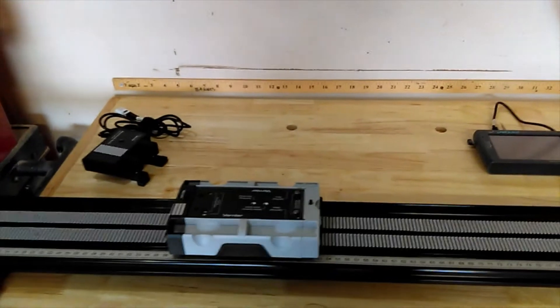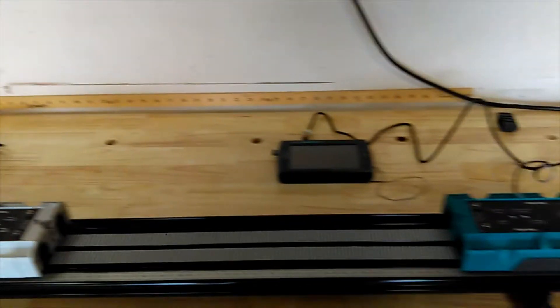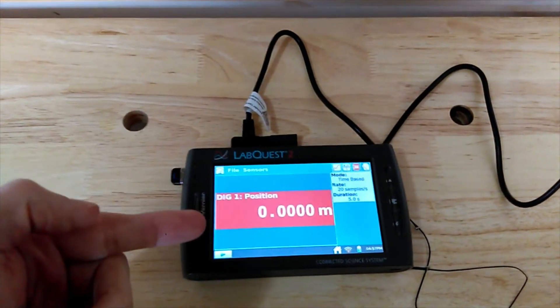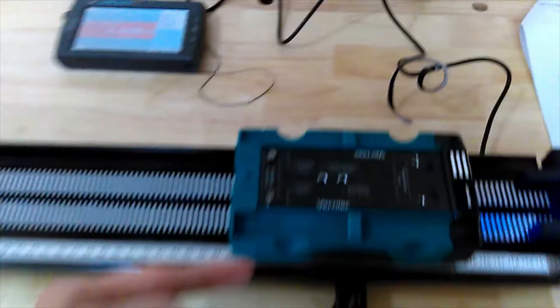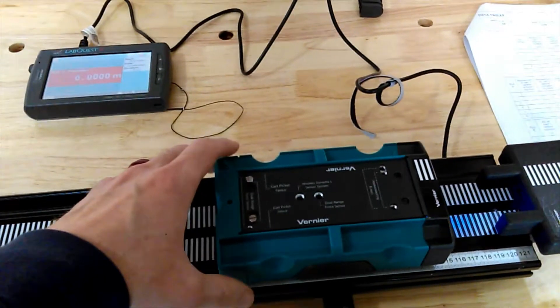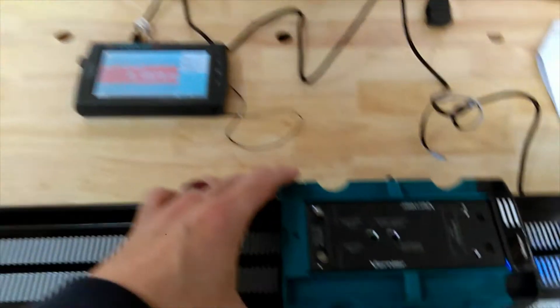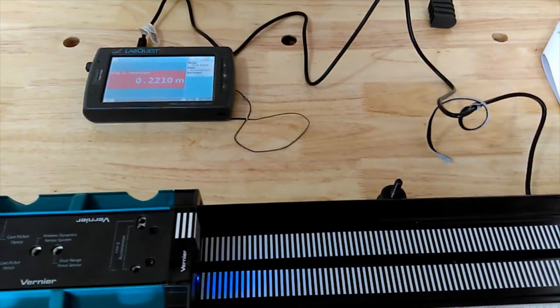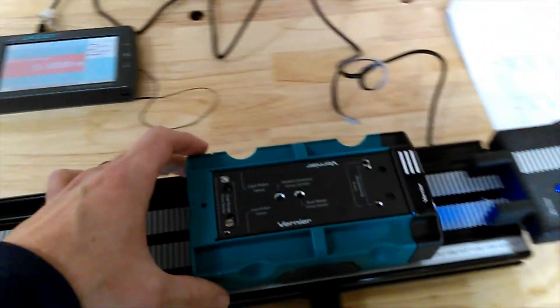We've got LabQuest over here measuring a position of zero meters. It's measuring the position of this teal car. We're going to call this car number one. As I move it slightly, you can see it tracking the position at the top.